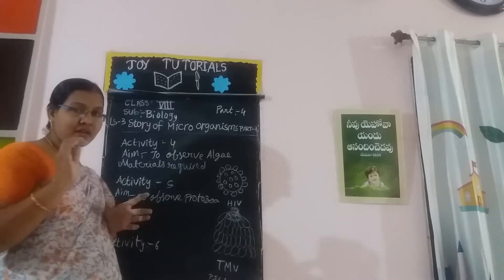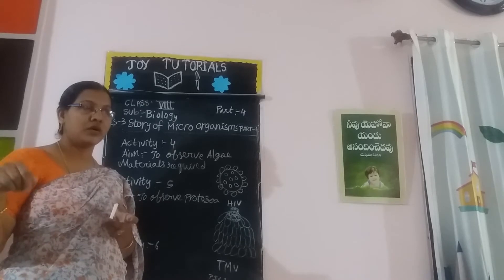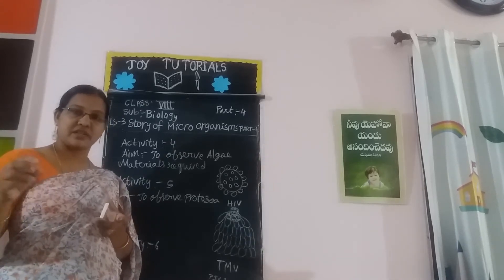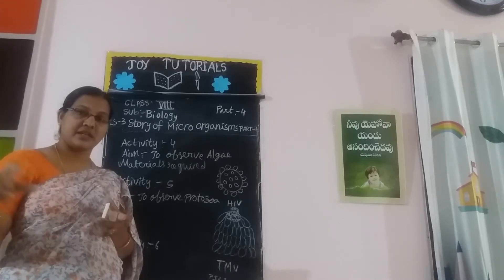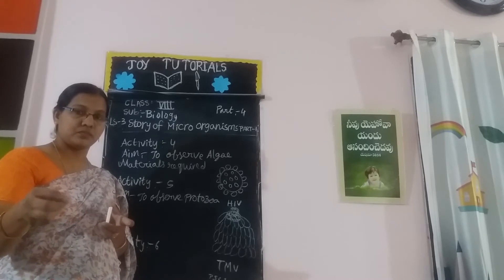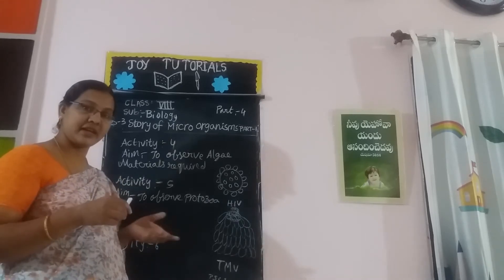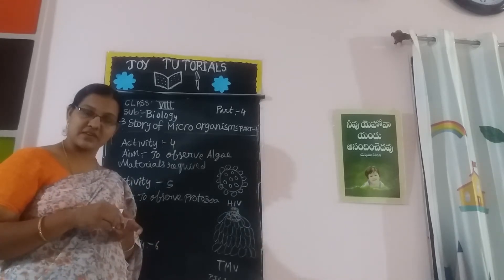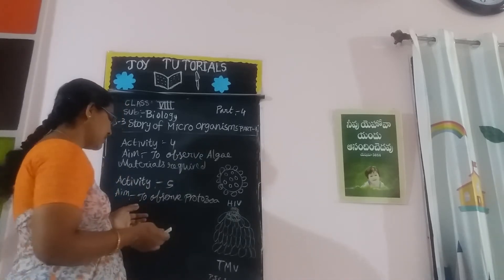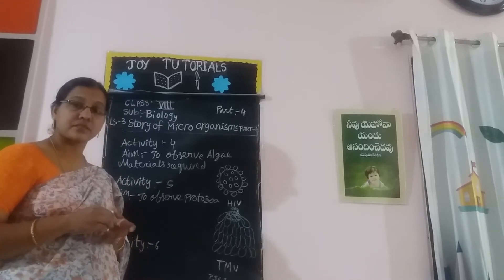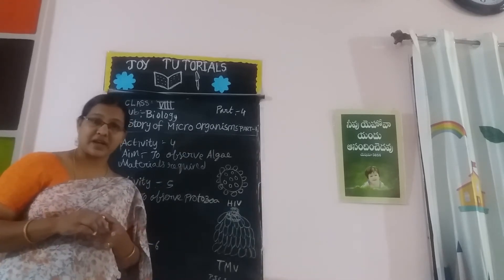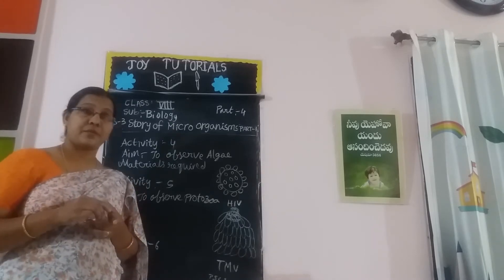We have to prepare a hay decoction — soak the hay in water and after 3 to 4 days prepare the decoction. After 3 to 4 days, put one drop of hay decoction onto the glass slide, cover with a coverslip, observe under the microscope, then draw rough sketches in your notebook. That is how we observe protozoa.